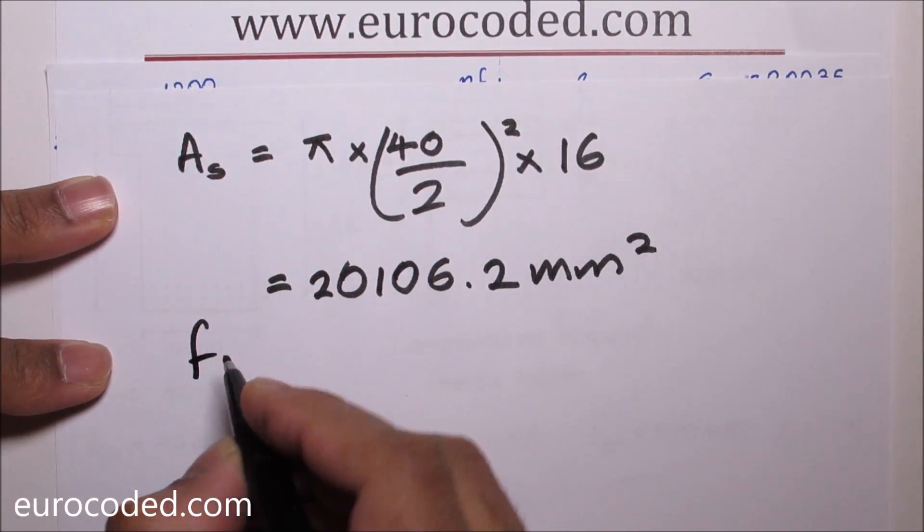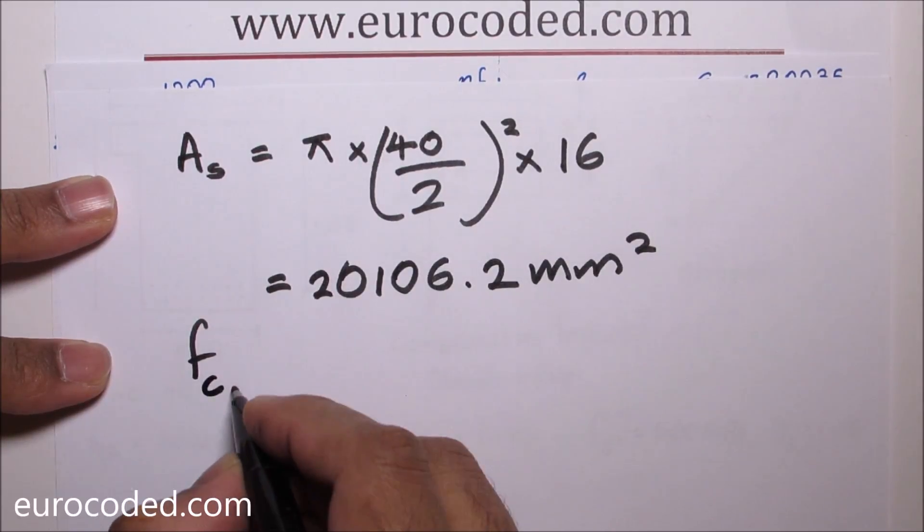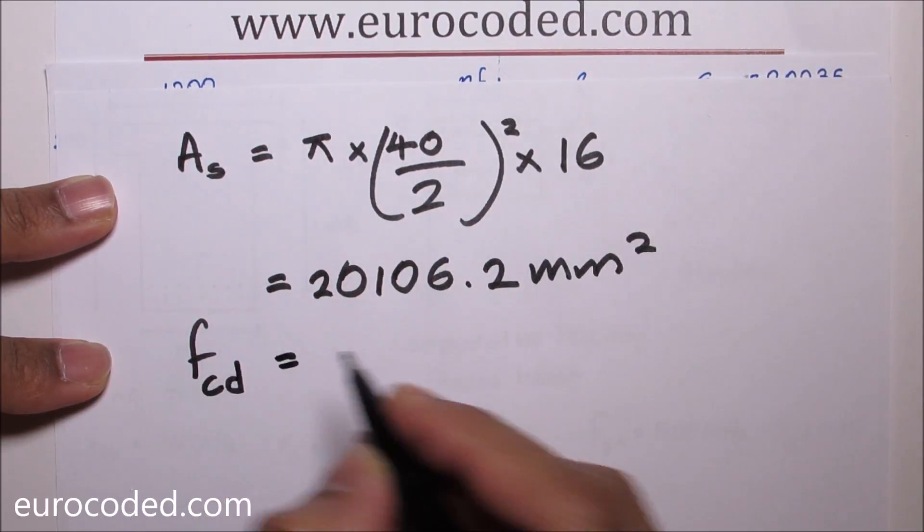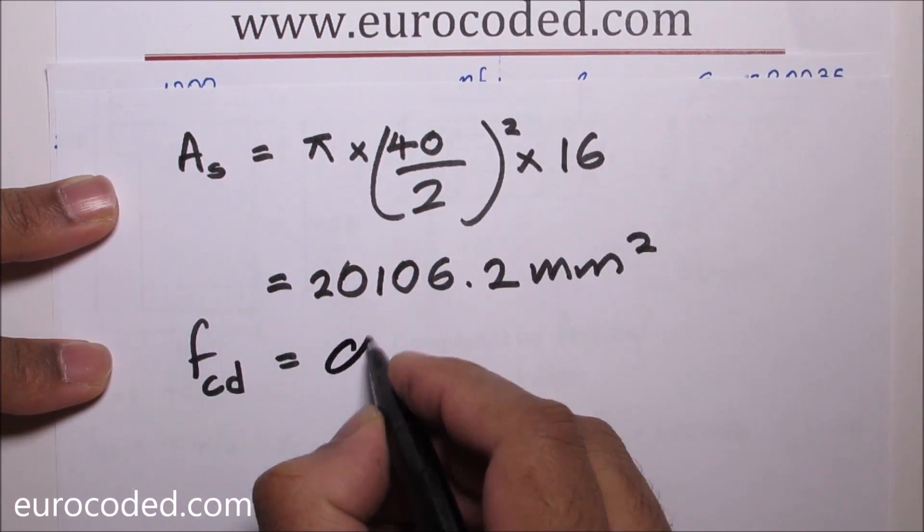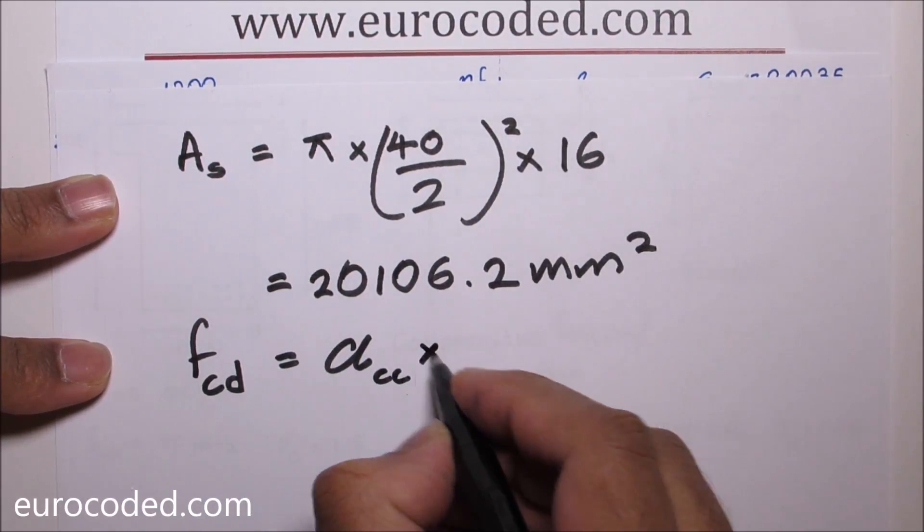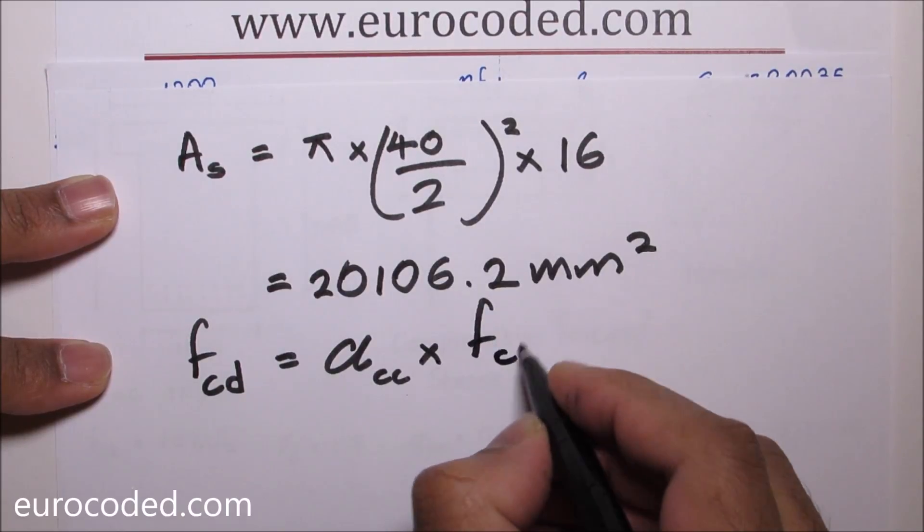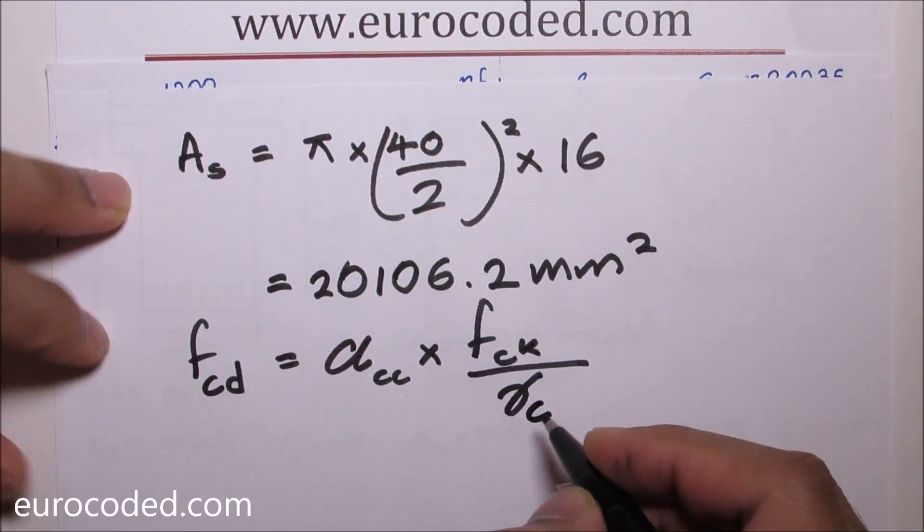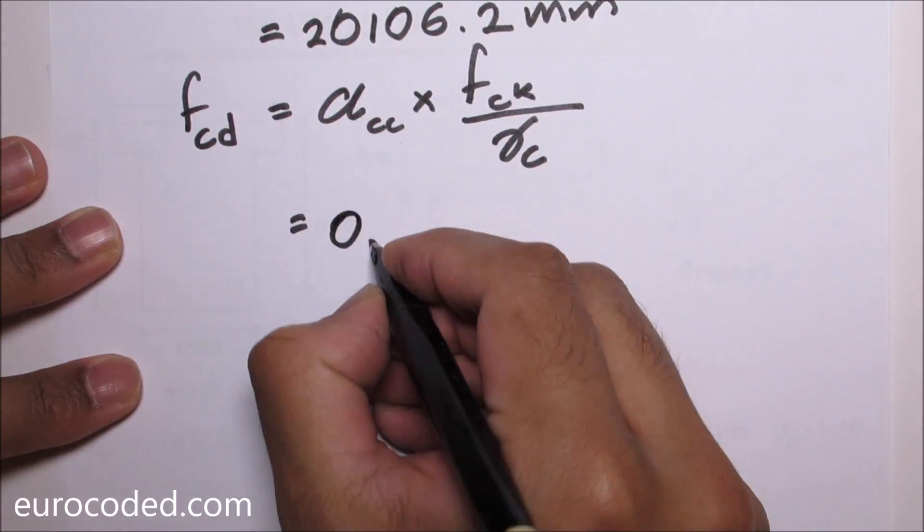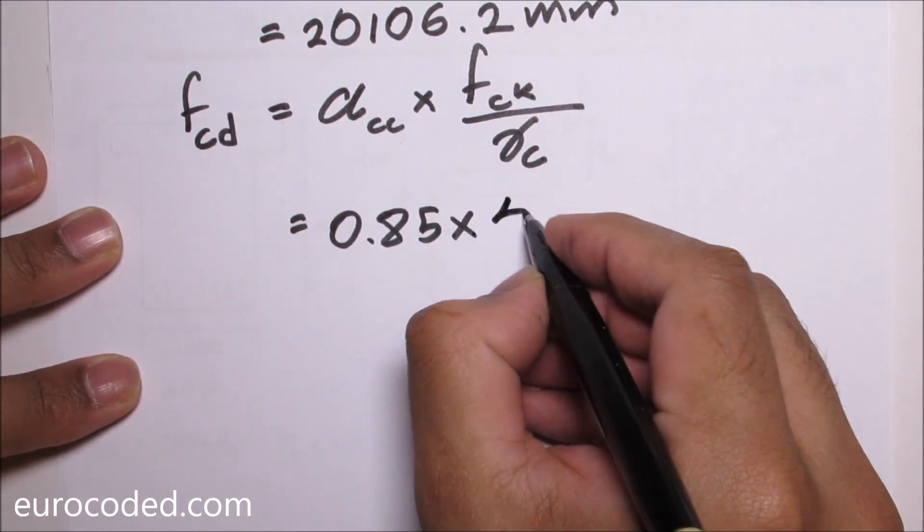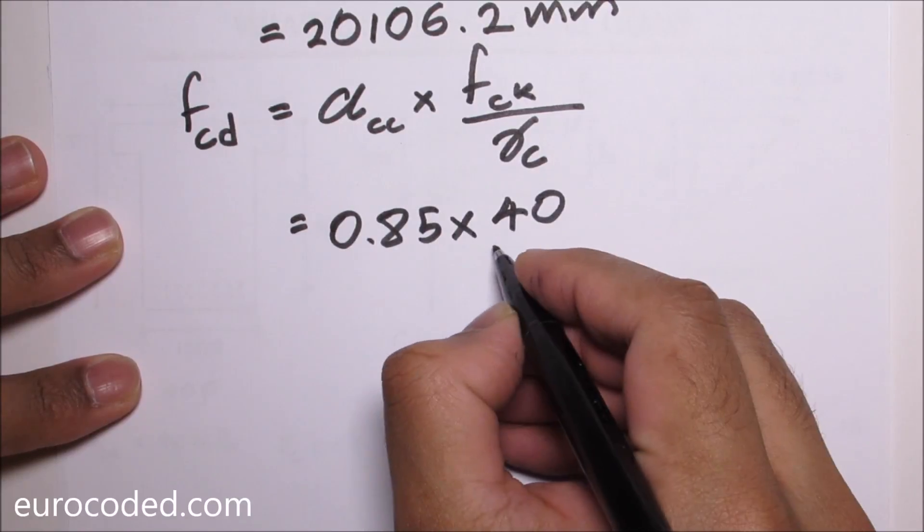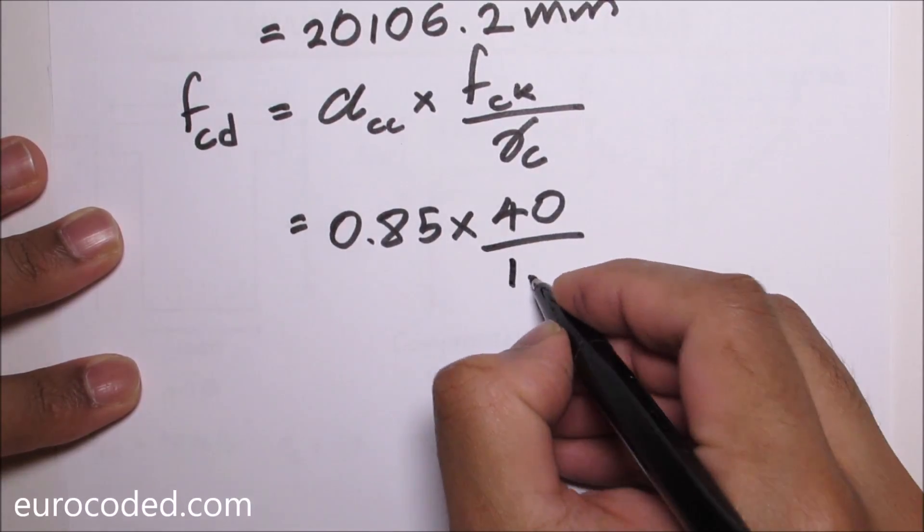FCD, the design value of our concrete strength, is going to be alpha CC times FCK over gamma C, which is 0.85 times 40 over 1.5. This comes to 22.67 megapascal.